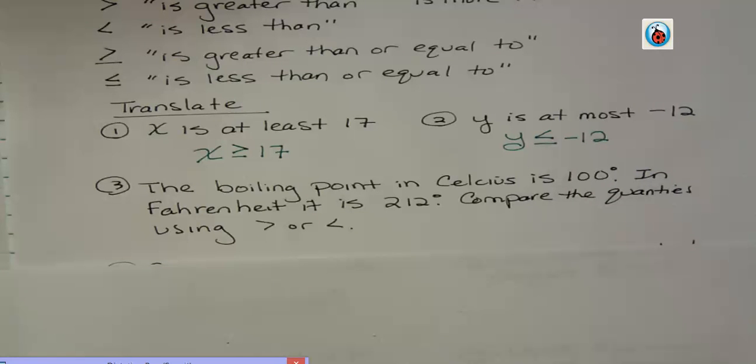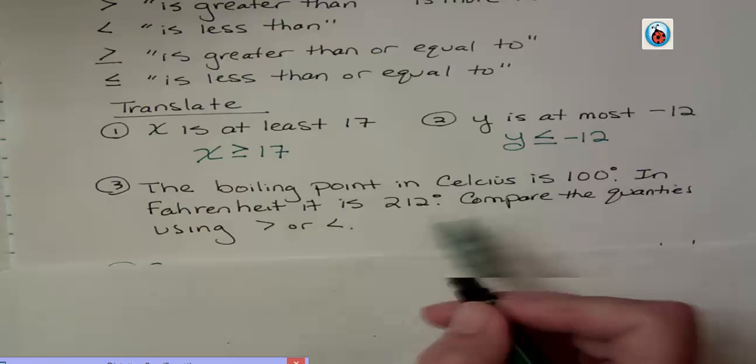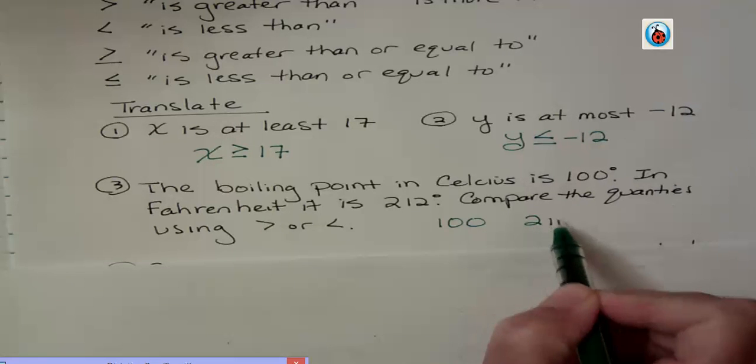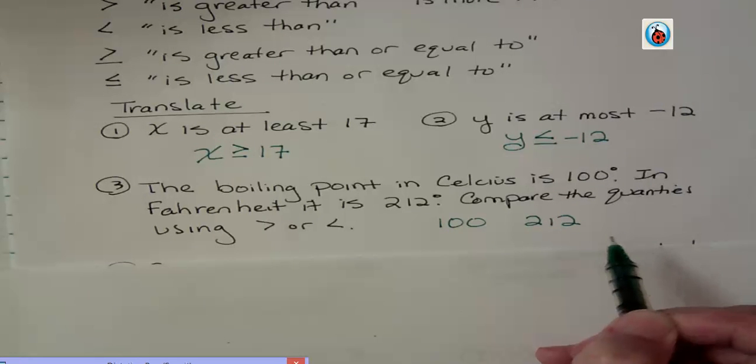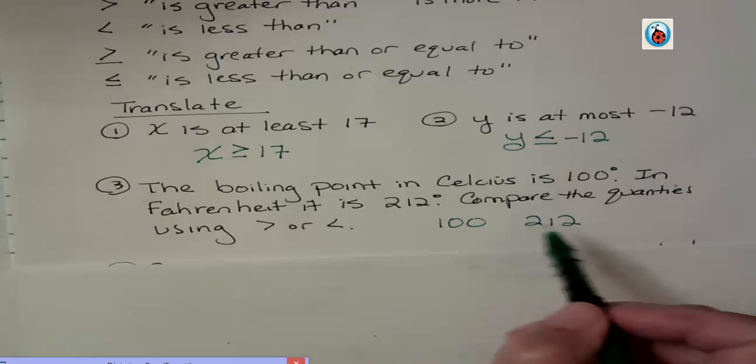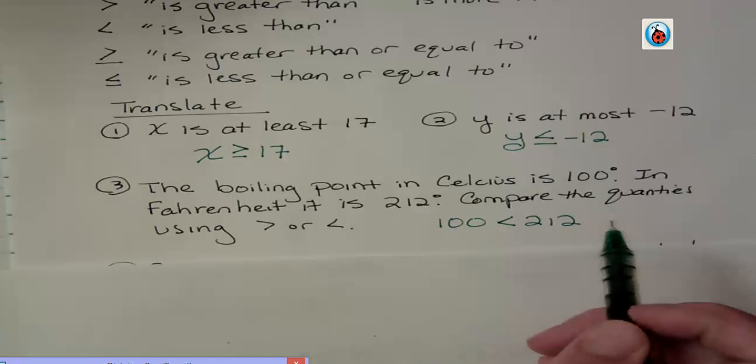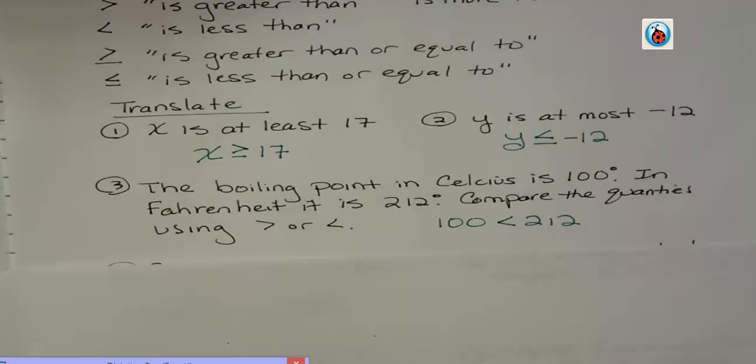Well, Celsius boiling point is 100 and Fahrenheit is 212. Just strictly speaking about the numbers and not their actual temperature, because they both are where the point where water boils, 100 is less than 212. We point to the smaller number.